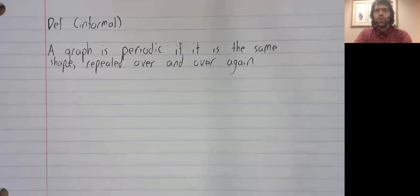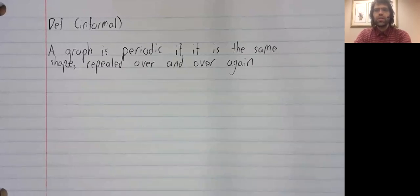Trigonometry is used for the study of periodic phenomena. What do we mean by periodic? For now, we'll content ourselves with an informal definition. A graph is periodic if it is the same shape repeated over and over again.